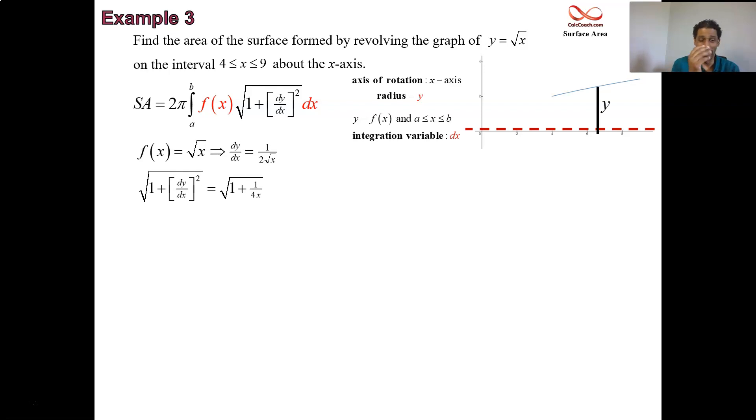Add 1, and you get 1 plus 1 over 4x. Slap a root around it. But don't add 1 though. Don't add it as 1. When your derivative squared is a fraction, then you add 1 by adding the denominator over itself. So add 4x over 4x.